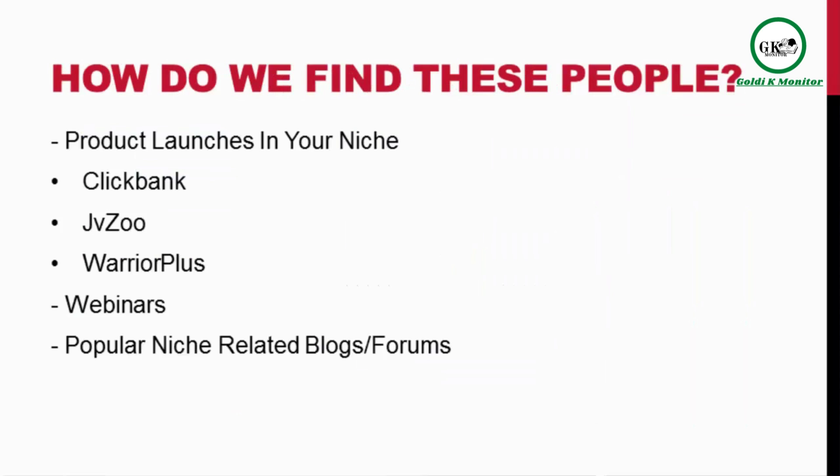So how do you find people that have a huge email list in your niche? There are multiple ways. Product launches are one — every niche has people launching information products. You can head over to ClickBank.com, JVZoo, Warrior Plus, or any affiliate network and search for all the different products they offer.